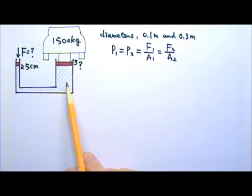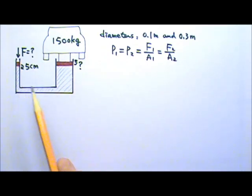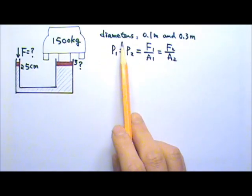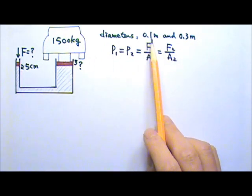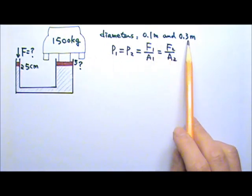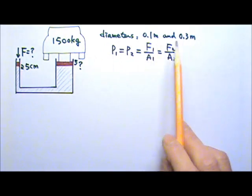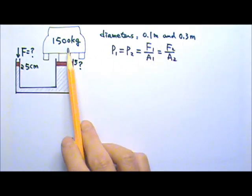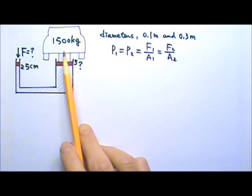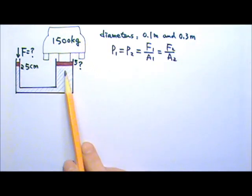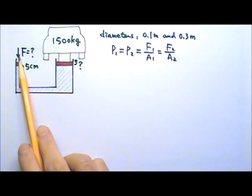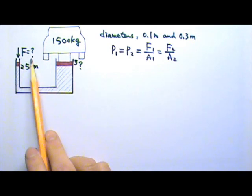In this hydraulic lift, the diameters of the two pistons are 0.1 meters and 0.3 meters. A 1500 kg car is to be lifted by the large piston. What force has to be applied to the small piston?